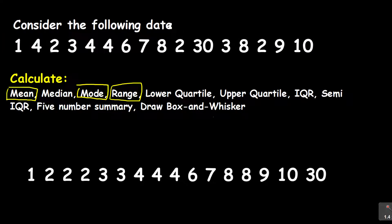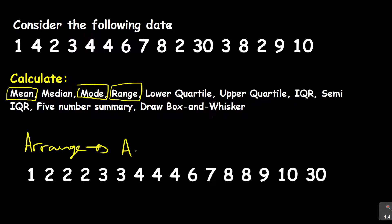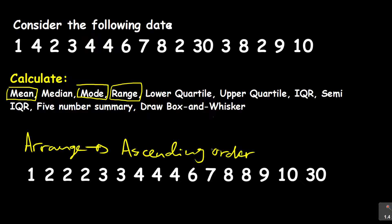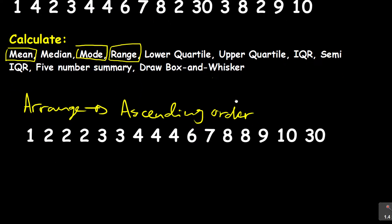Even if I count here again — 1 through 16 — I get 16 values: 6, 7, 8, 8, 9, 10, and 30 are all covered. So I arrange this data according to ascending order, meaning from the smallest number to the highest number. From there you are in a position to answer the questions that follow.